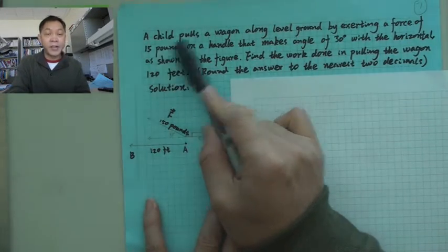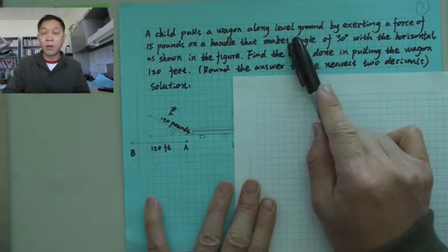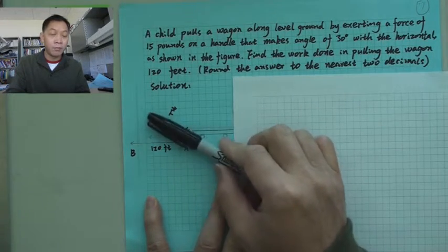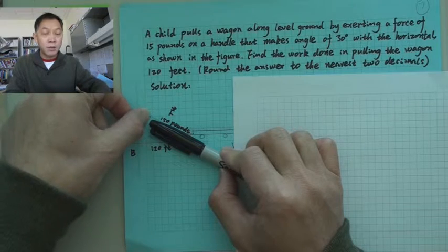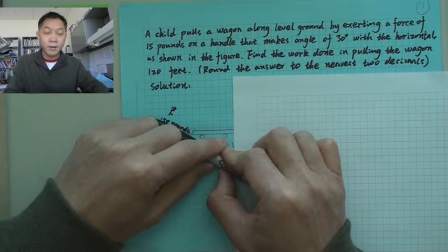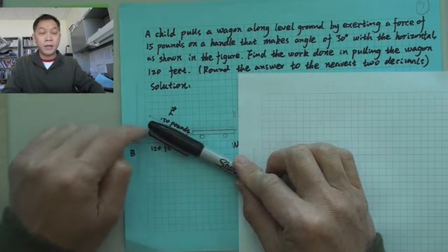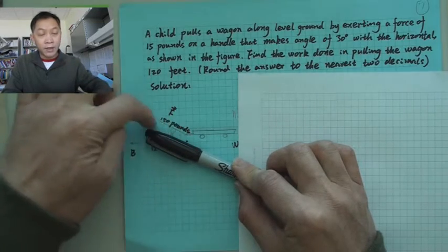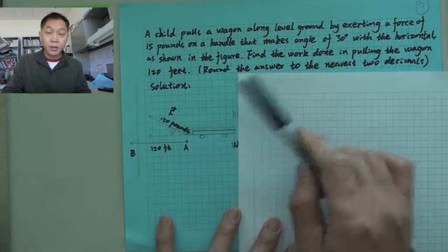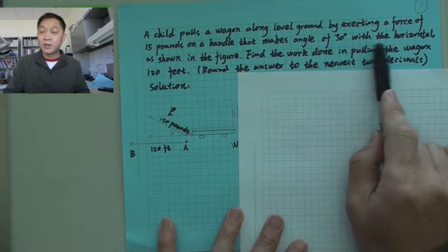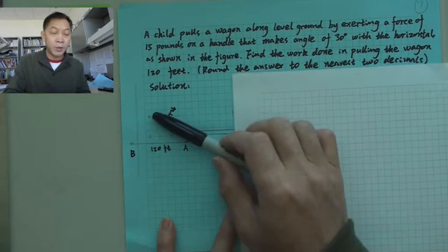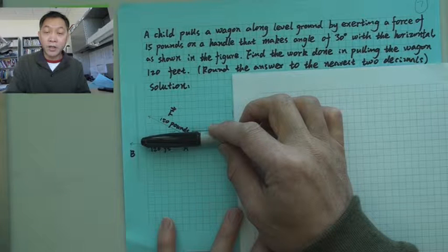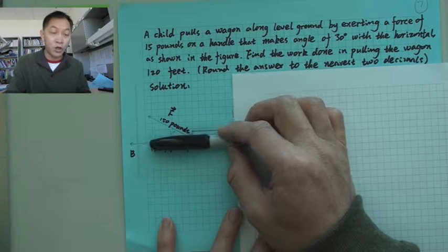In this example, a child pulls a wagon along level ground by exerting a force of 15 pounds on the handle. The child is holding the handle and moving the wagon. The handle makes an angle of 30 degrees with the horizontal direction, as shown in the figure.